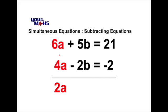So 6a minus 4a gives us 2a. In the next column we've got 5b minus negative 2b and that means it's like adding. So 5b plus 2b gives us 7b and in the last column we've got 21 minus negative 2 which gives us 23.